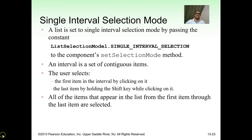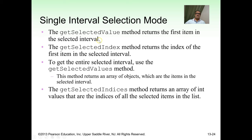The getSelectedValue method returns the first item in the selected interval. To get the entire selected interval, use the getSelectedValues method, which returns an array of objects. The getSelectedIndices method returns an integer array of the indices of all selected items.